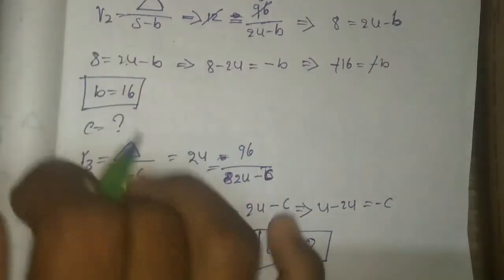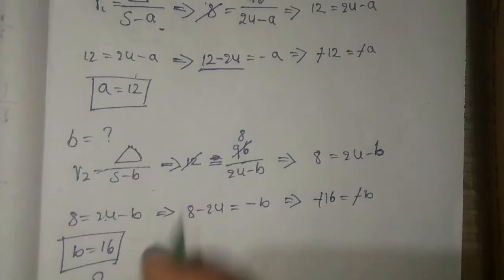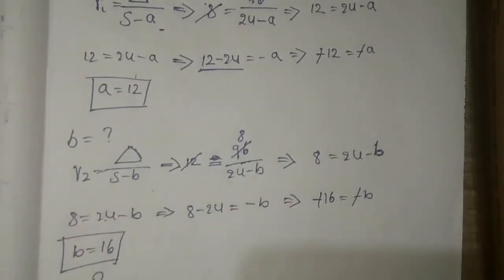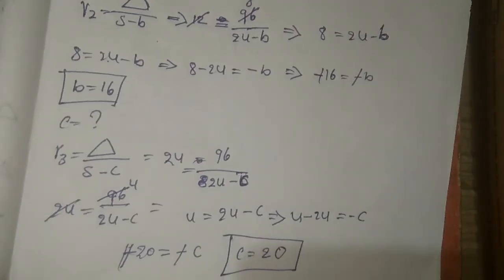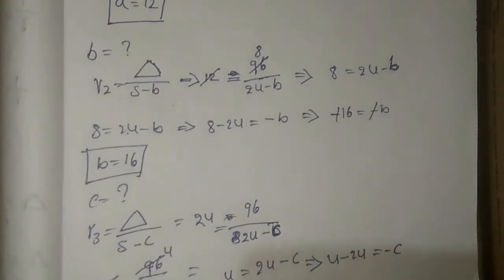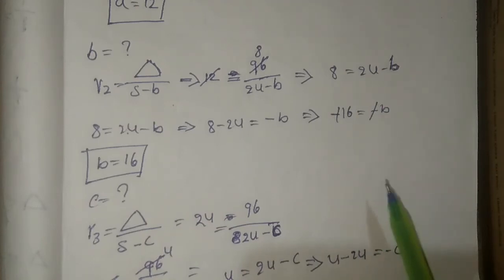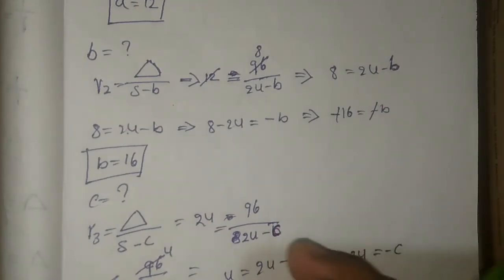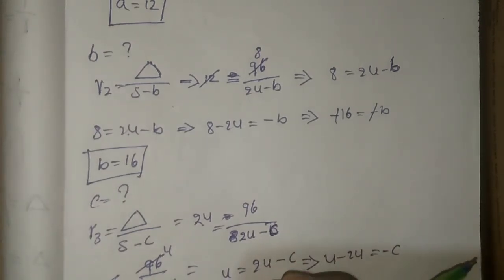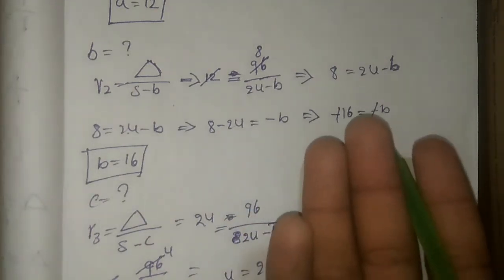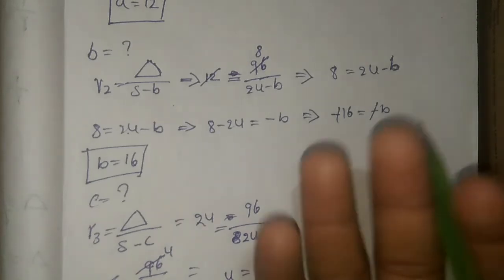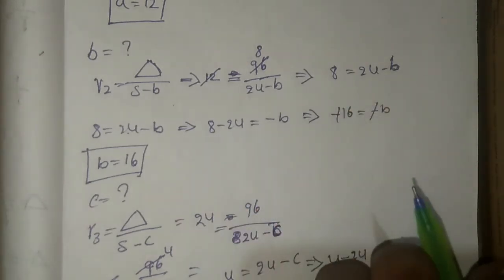So now we have successfully found the A, B, C values: A value is 12, B value is 16, and C value is 20. If you did not understand this video, please keep watching from first to last. You have to understand the concept — what is given and what we need to find. If you like this video, please subscribe for more videos.